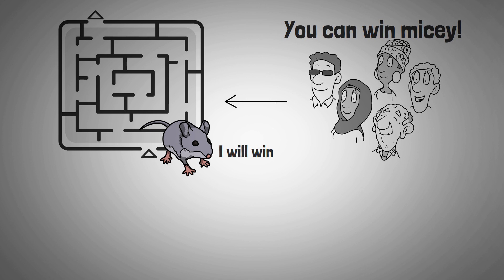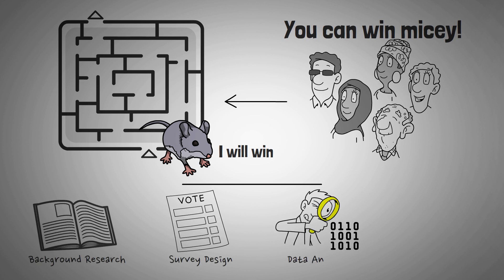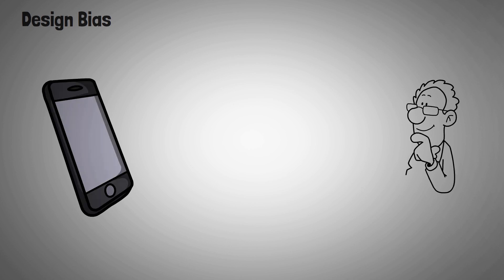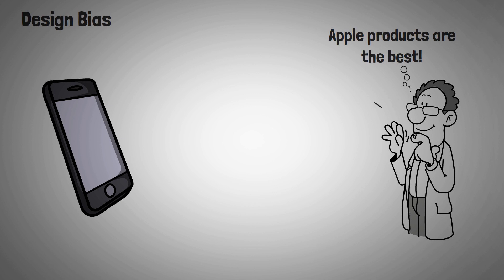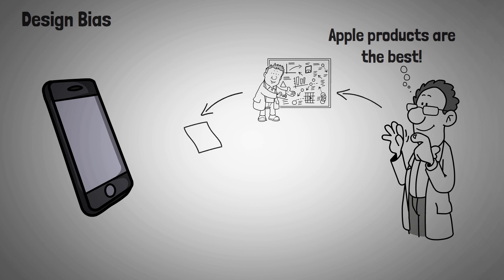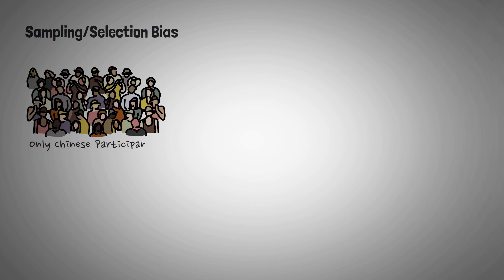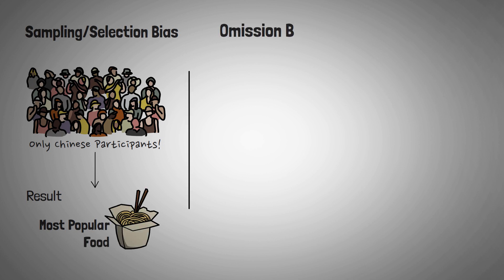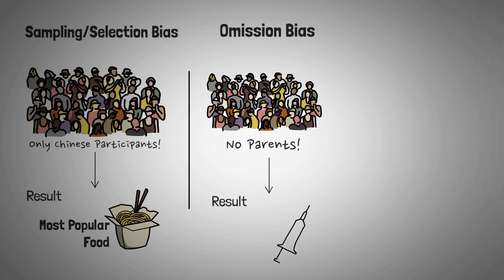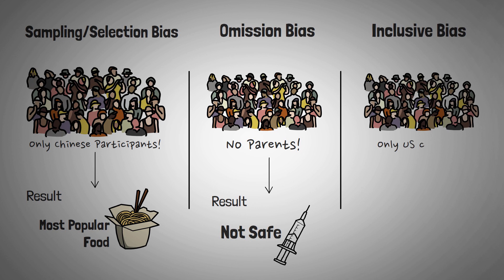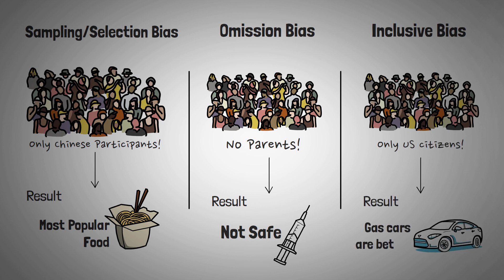Experimenter-subject interaction is not the only source of experimenter bias. Experimenter bias can take place in all study phases, from initial background research and survey design to data analysis and the final presentation of results. Design bias is one of the most frequent types, happening when researchers establish a particular hypothesis and shape their entire methodology to confirm it. Rosenthal showed that 70% of experimenter biases influence outcomes in favor of the researcher's hypothesis. Sampling or selection bias refers to choosing participants in a way that certain demographics are underrepresented or overrepresented. The omission bias occurs when participants of certain ethnic or age groups are omitted, while inclusive bias involves selecting samples for convenience within a narrow demographic range.